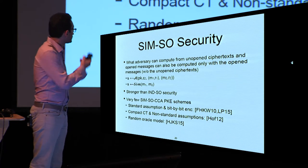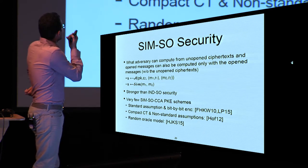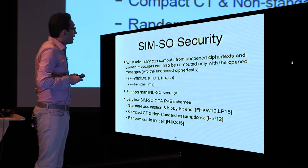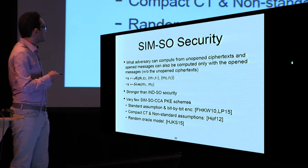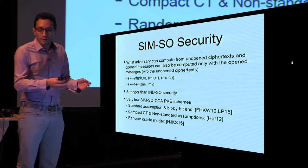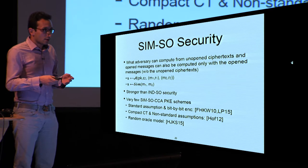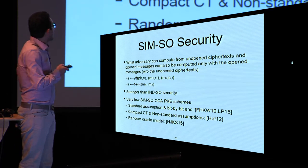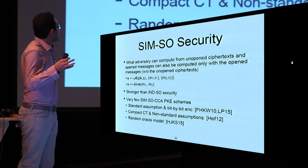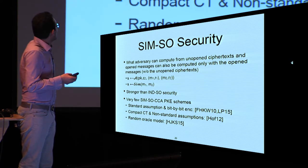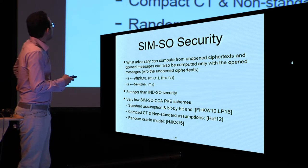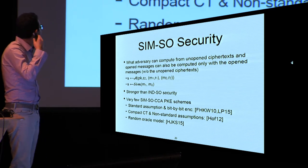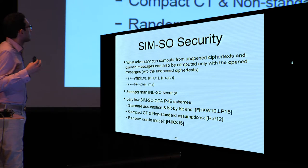For simulation-based selective opening (SIM-SO) security, we ask a simulator to output exactly what is produced by an adversary that has seen the public key, ciphertexts, and opened ciphertexts. In simulation-based selective opening, the adversary sees the public key, the ciphertexts, the opened ciphertexts, and then outputs something. We want a simulator that only sees the open messages to produce the same output. If the simulator can be computed with only the open messages, then SIM-SO security is achieved.